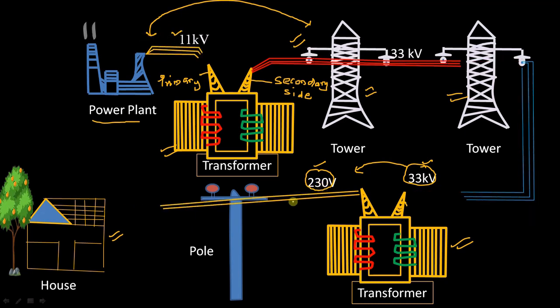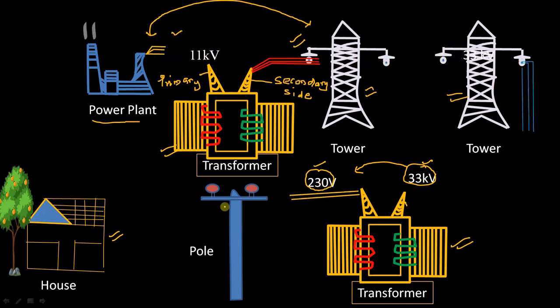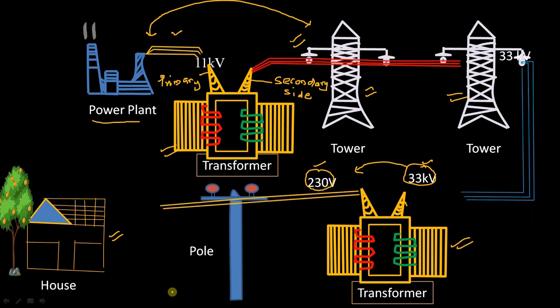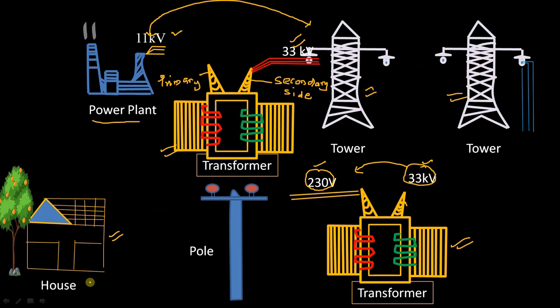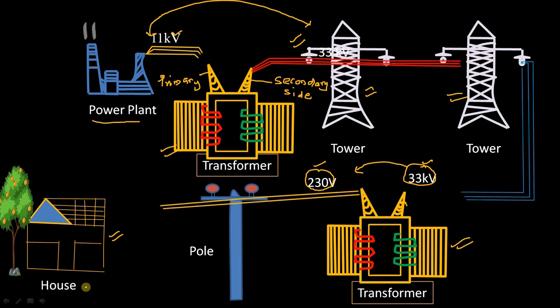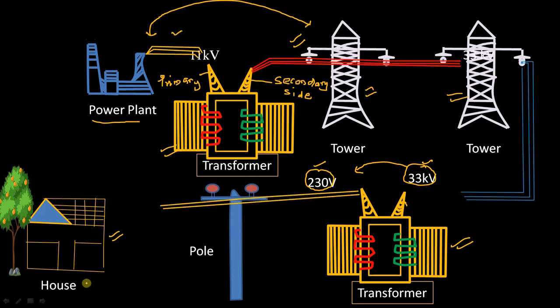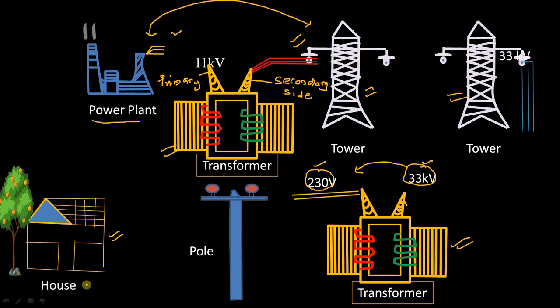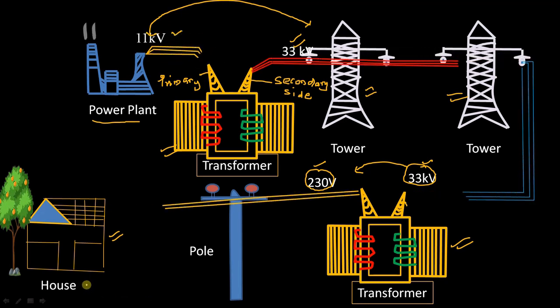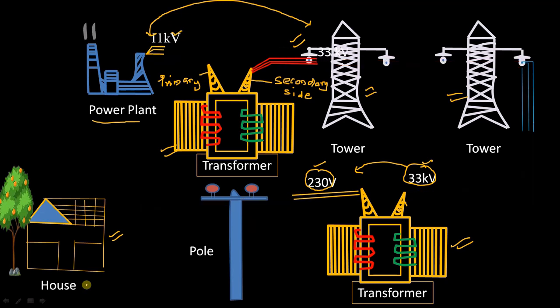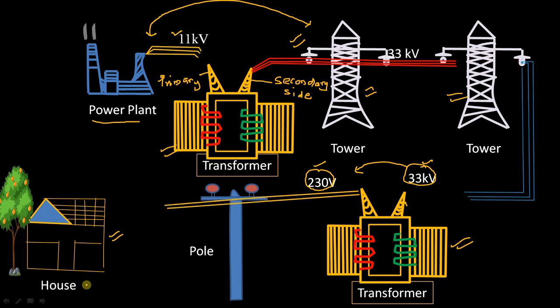This 230 volts is connected to the house. This is the basic idea of a transformer. The basic function of a transformer is to transfer power from one place to another with a desired change in voltage.